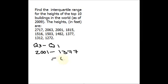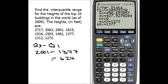That gives me 624 feet. That is how to find the interquartile range using the TI-83. Check us out at StatisticsHowTo.com for more videos and articles on everything elementary statistics.